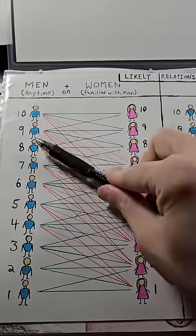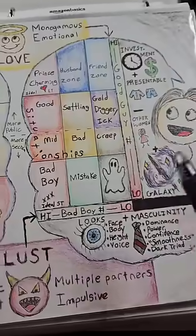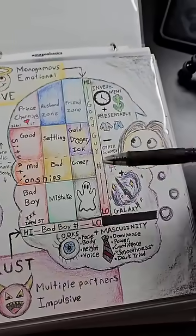This is either value differences, or it is a niceness ick, which I believe can lower attraction, or it's both.